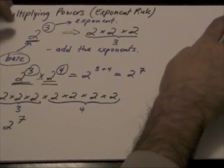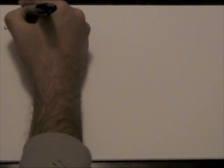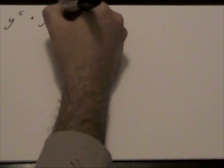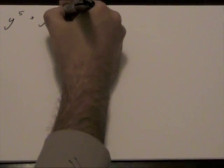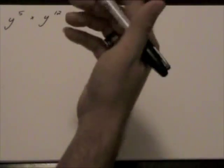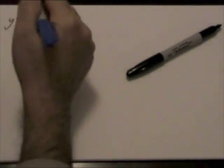Let's look at some more examples. y to the power of 5 multiplied by y to the power of 12. Instead of multiplying y by itself 5 times, based on our rule when we are multiplying powers,